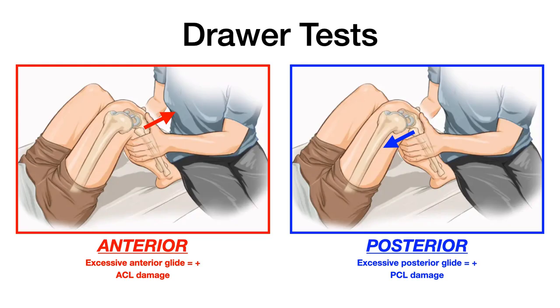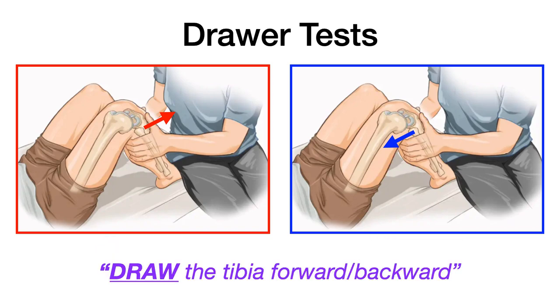We're going to start with the drawer tests. There's anterior and posterior drawer tests, and they're pretty much exactly the same — the only difference is the direction of translation of the tibia. In the anterior drawer test, the examiner holds the patient's tibia and moves it anteriorly. In the posterior drawer test, it's the same thing but directed posteriorly. Excessive glide indicates ACL pathology on the anterior drawer test, or PCL pathology on the posterior drawer test. To remember this, just think of drawing the tibia forward or backward.